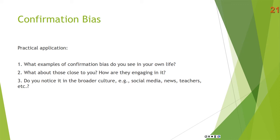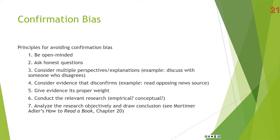Principles for avoiding confirmation bias. One, be open-minded — being open to the evidence, looking for evidence on both sides, being willing to change your mind. These are virtues. However, we need to keep in mind that the goal of being open-minded is finding the truth. So if you find the truth, hold on to it, even while you're still willing to look at more evidence that may come to light. Two, ask honest questions. Asking questions is so good — it helps us listen to others and helps us understand things rather than just thinking we already understand.